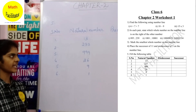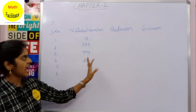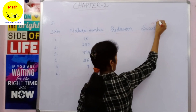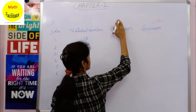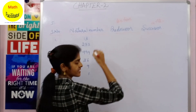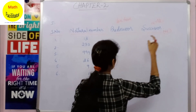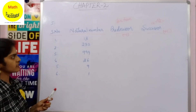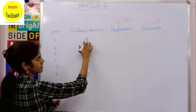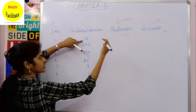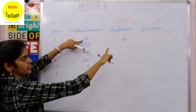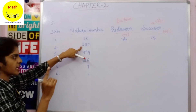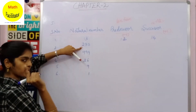Moving on, you have to fill a table where a natural number is given and you find its successor and predecessor. Successor is the after number: add 1 to get it. Predecessor is the before number: subtract 1 to get it. So the predecessor of 13 is 12 — the number before 13. The successor of 13 is 14 — the number after 13. For 237: subtracting 1 gives predecessor 236.